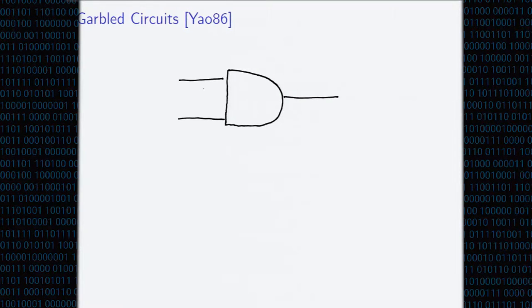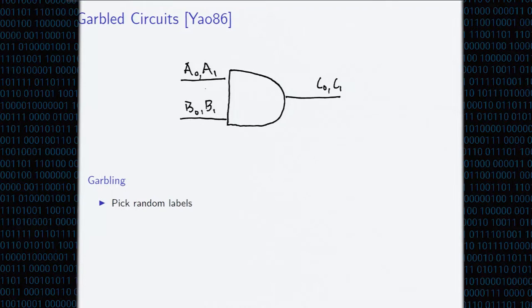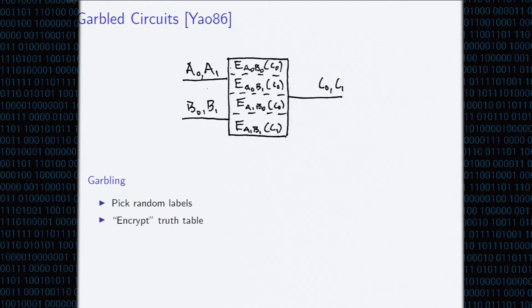So first, let's recall old-fashioned garbling. We want to garble this circuit. How do we do this? We first choose, for each wire in the circuit, two random labels. These are going to correspond to the values that can lie on the wire. And then to garble a gate, we're going to take its truth table, and we're going to view these wire labels as encryption keys, and we're going to encrypt the corresponding output wire label under the corresponding input keys. So for example, C0 is going to be encrypted under A0, B0, if this is an AND gate, where the subscripts denote the truth values.